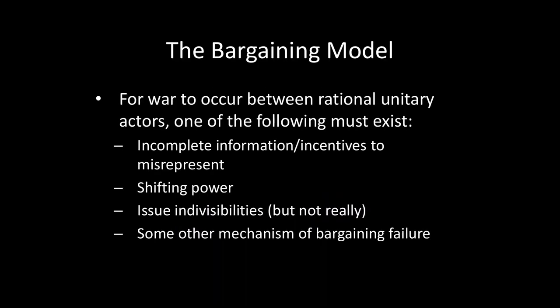In this unit, our focus has been on the bargaining model. What we've learned is that for war to occur between rational, unitary actors, we need one of the following. Perhaps we have incomplete information and incentives to misrepresent, so that each side in bargaining takes a firmer bottom line than they should, and they can't credibly communicate what their real bottom lines are, leading to demands that are incompatible and conflict as a result.